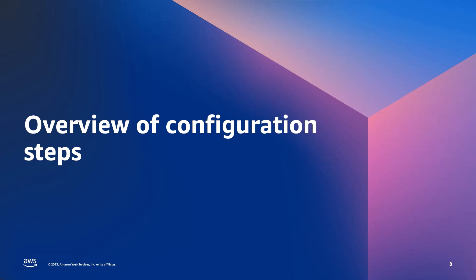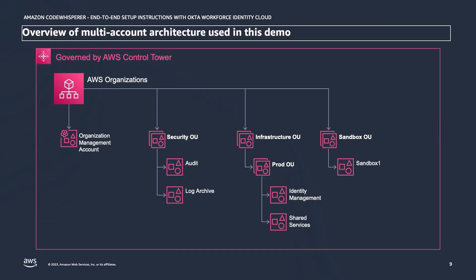Before we jump into the configuration steps, let's look at the multi-account AWS environment I am using and talk about some best practices for configuring IAM Identity Center and CodeWhisperer. AWS recommends that all customers segment their workloads and resources into multiple AWS accounts grouped together according to purpose, phase of development, and other categories useful for governance. Using multiple AWS accounts can help you optimize across most of the AWS Well-Architected pillars, including operational excellence, security, reliability, and cost optimization. One important best practice for working with Identity Center is delegating administration to a dedicated Identity Management AWS account.